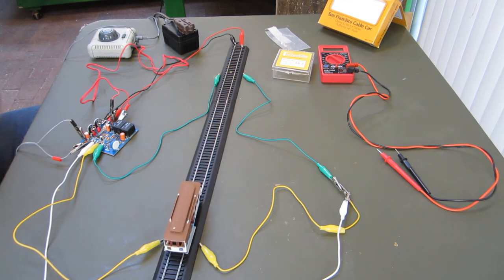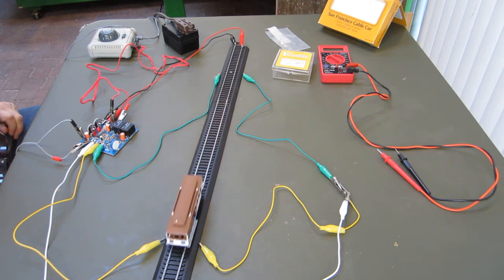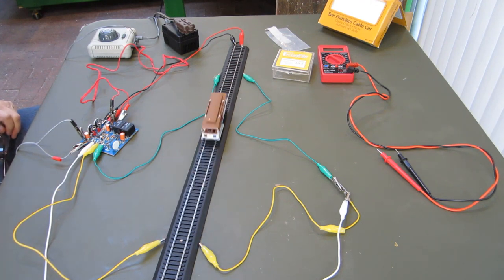And that's the Circuitron AR2 automatic reverse circuit. If you follow the directions, you'll have an excellent addition to your HO layout.